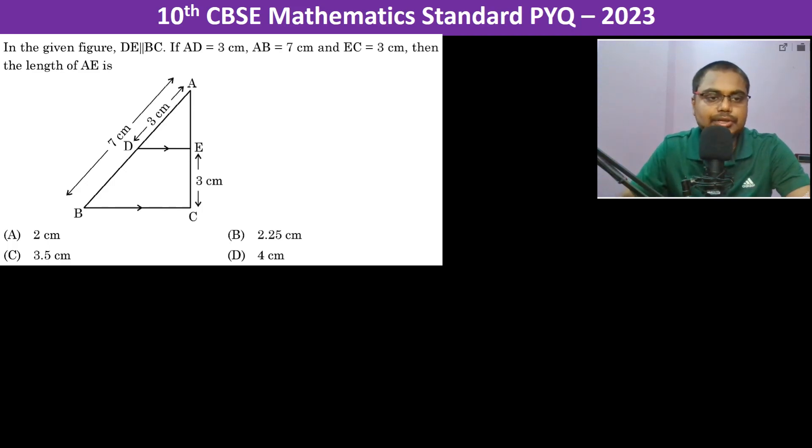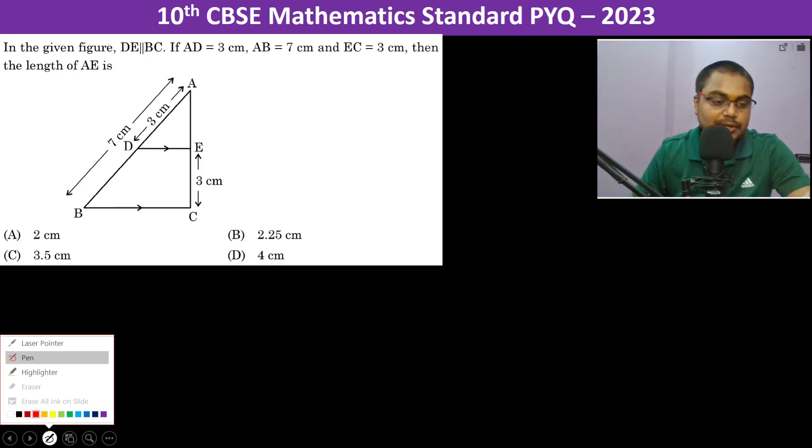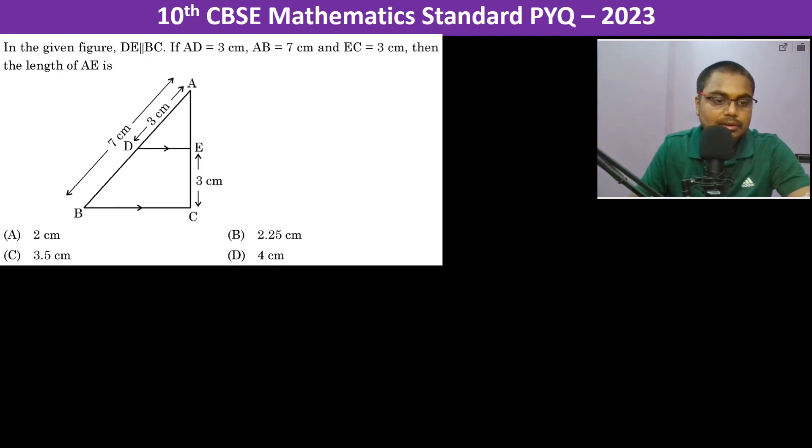In the given figure, D is parallel to BC. Given AD = 3 cm, AB = 7 cm, and EC = 3 cm, we need to find the length of AE. Let us see in triangle ADE and triangle ABC.